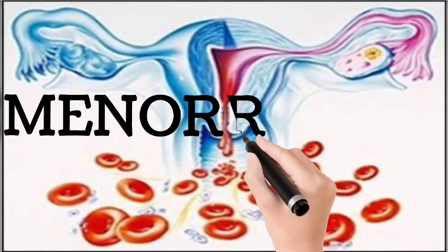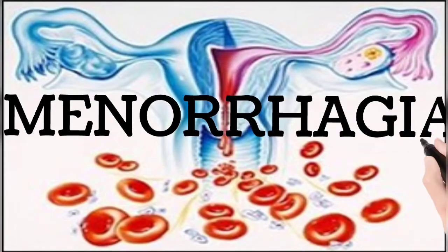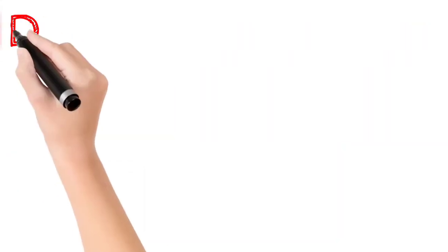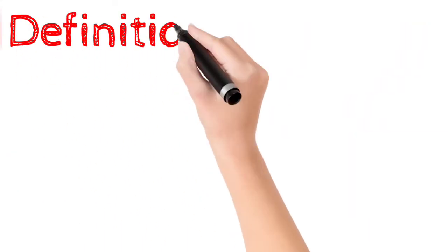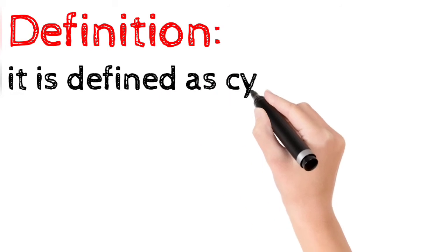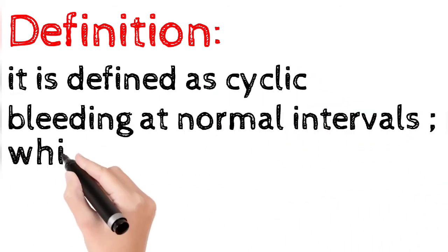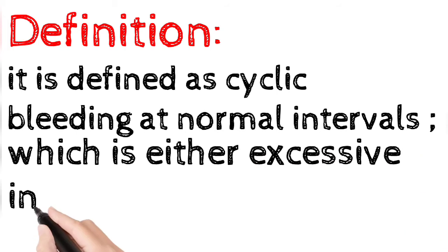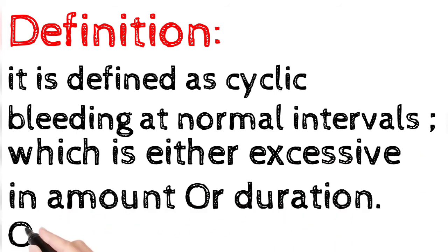Hello friends, welcome to our channel. Today's topic is menorrhagia. First of all, the definition: What is menorrhagia? It is defined as cyclic bleeding at normal intervals which is either excessive in amount or duration or both.